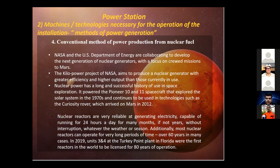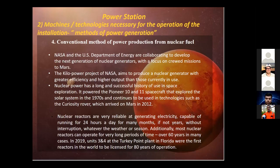Nuclear reactors are very reliable at generating electricity, capable of running 24 hours a day for many months or years without interruption regardless of weather or season. Most nuclear reactors can operate for over 60 years, and in 2019 units three and four at the Turkey Point plant in Florida became the first reactors licensed for 80 years of operation. We can use this nuclear power technology on Mars because it is very safe and can generate large amounts of electricity from a small amount of fuel.